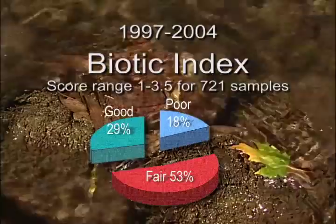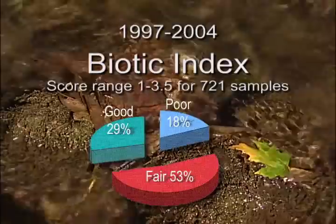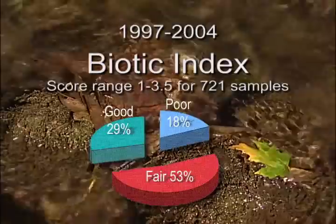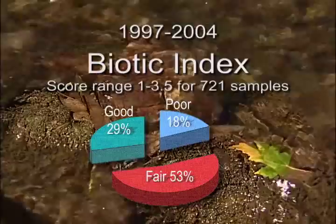The biotic index score is a water quality rating of poor, fair, good, or excellent. Biotic index scores ranged from 1 to 3.5 for 721 biotic indices determined between 1997 and 2004. 18% showed poor water quality, 53% indicated fair water quality, and 29% indicated good water quality. No sites were recorded as excellent. However, this doesn't mean there are no streams in Wisconsin with excellent water quality — it's more likely due to how we calculate our biotic index. Because we only look at presence and absence of organisms, and those organisms that can tolerate polluting conditions can also live in clean streams, their presence in good water quality streams brings down the overall rating.